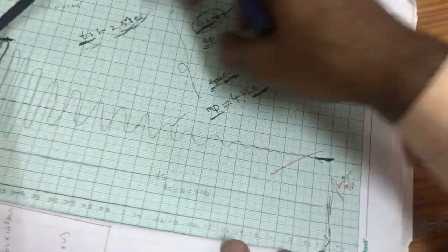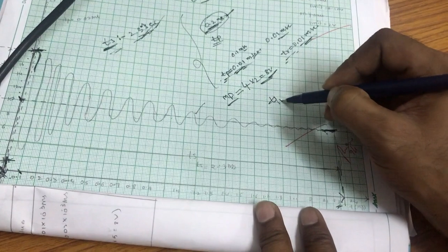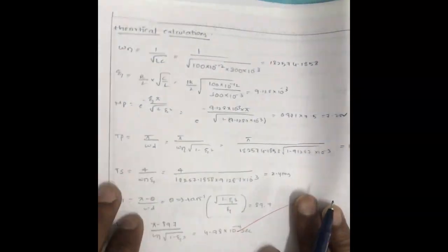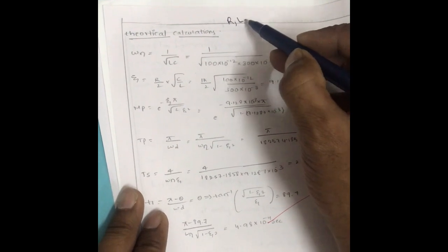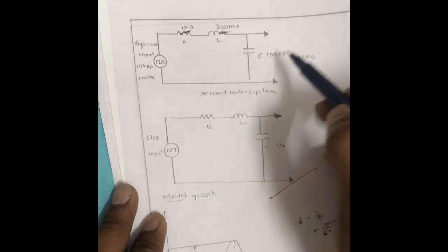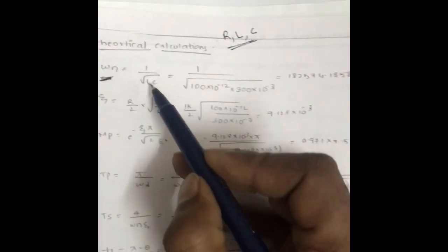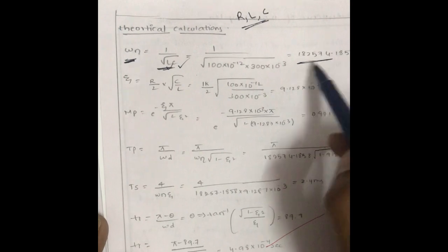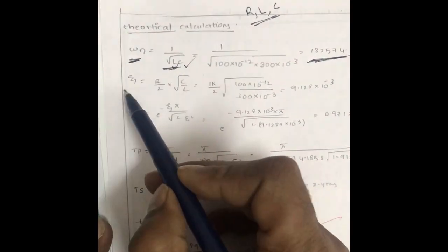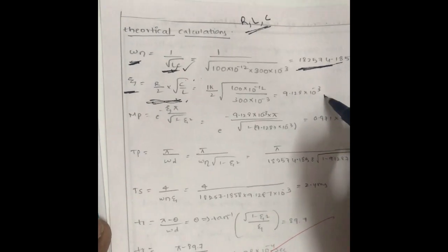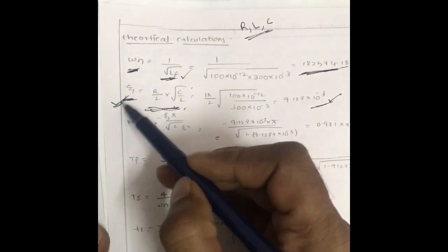After finding all those values, we substitute them in the transfer function. Coming to theoretical calculations: R = 1 kΩ, L = 300 mH, C = 100 pF. The formula for undamped natural frequency ωn is 1 divided by √(LC). Substituting L and C values gives us the ωn. The formula for damping factor ζ is R/2 × √(C/L). Substituting all values gives ζ = 9.12 × 10⁻³.